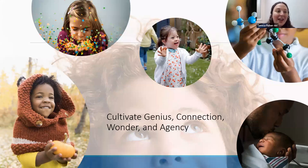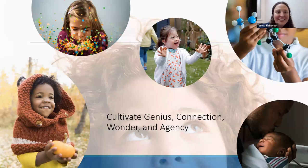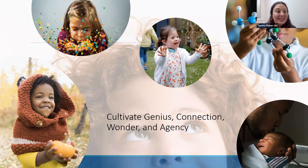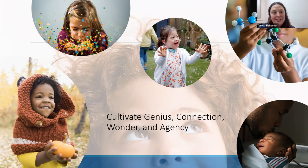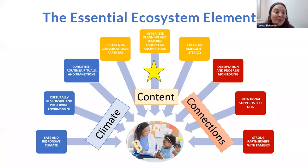Essentially, what we want is for every child to have their genius cultivated, seen, and celebrated — where every classroom is filled with connection and joy, where the wonder of learning and the wonder that every child is are centered and celebrated. Agency — this idea that all of us have opportunity and insights we can use to change our communities, our classrooms, our relationships, and ourselves to make us continuously better and kinder. As we work to create these spaces for every child to thrive, all of our work is centered around every child deserving these things every day.